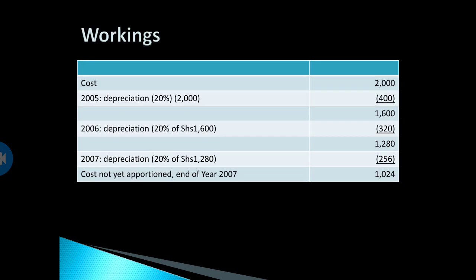In the statement of financial position, non-current assets are to be presented at cost less accumulated depreciation. Here is the working for the calculation of depreciation at the end of each year. In the first year, cost is 2,000 and depreciation for 2005 is 20% of 2,000, which is 400 — giving a carrying amount of 1,600. That 1,600 is subject to 20% to give depreciation of 320 for 2006. The carrying amount at end of 2006 is 1,280, and 20% of that gives 256 for 2007, leaving a carrying amount of 1,024 at 31st December 2007.